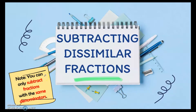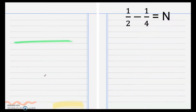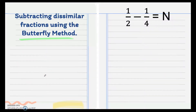Good day everyone. Now let's talk about subtracting dissimilar fractions. When you say dissimilar fractions, that means that the denominators are different. Now let's subtract dissimilar fractions using the butterfly method. Here are the steps: first, cross multiply.